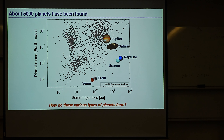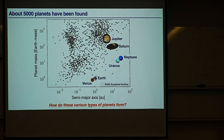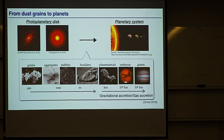The ultimate goal of my research is to understand how planets form. Here I'm showing the exoplanet population as a function of planet mass and semi-major axis, along with the solar system planets. As we can see, there are various types of planets, including some that don't exist in the solar system. To understand their origin and the variety, we have to understand dust evolution in proto-planetary disks.